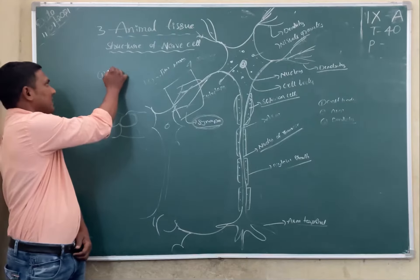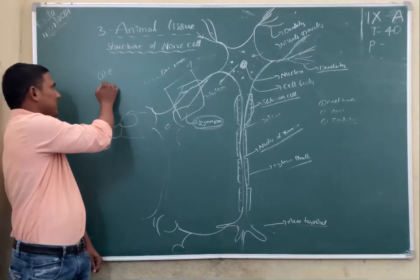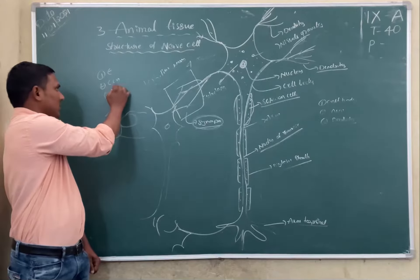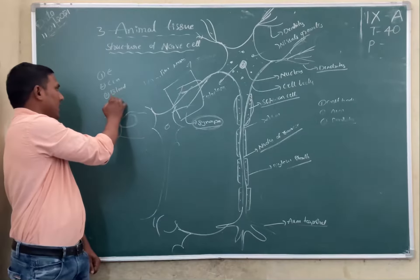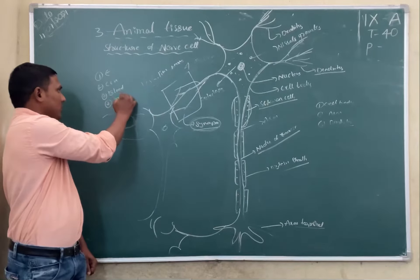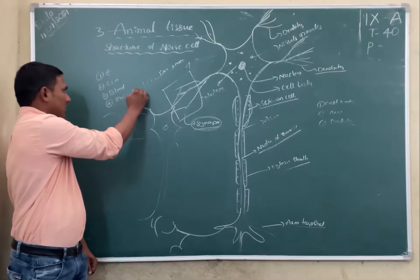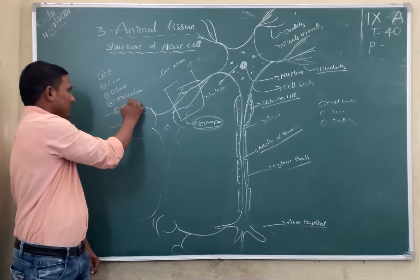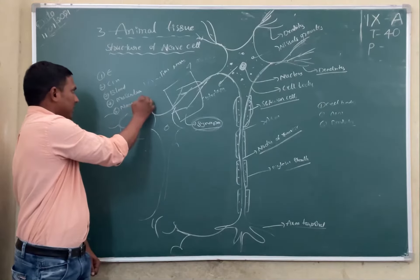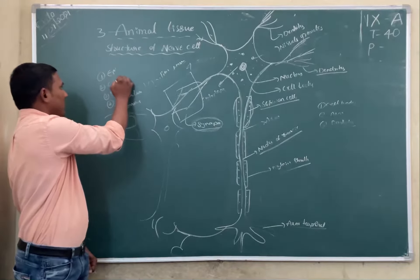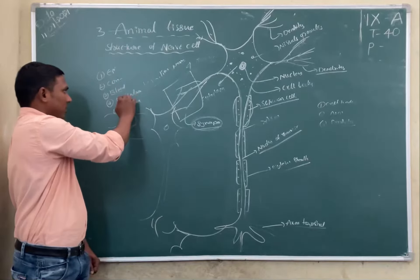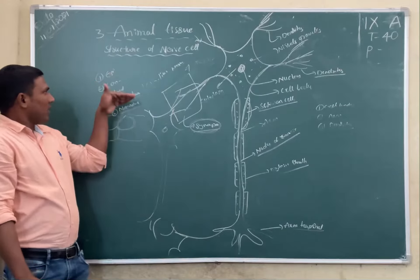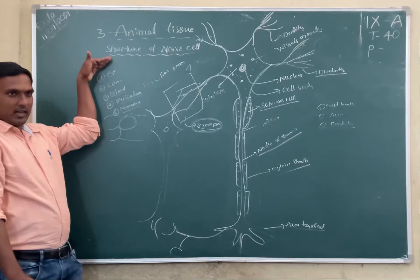One is called epithelial tissue, one is called connective tissue, one is called blood tissue, one is called muscular tissue, and the next one is called nervous tissue. Okay, five types of tissues are there: epithelial tissue, connective tissue, and nervous tissue. We already discussed about these tissues in the previous class.